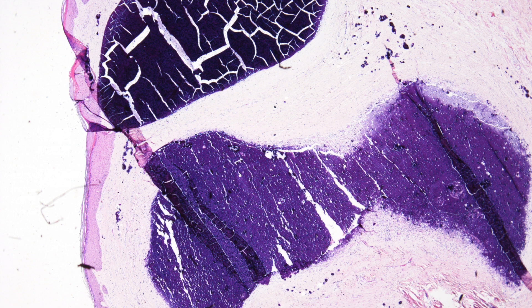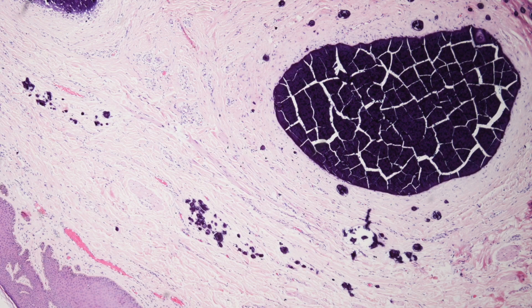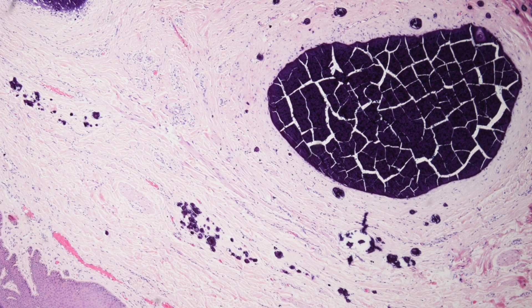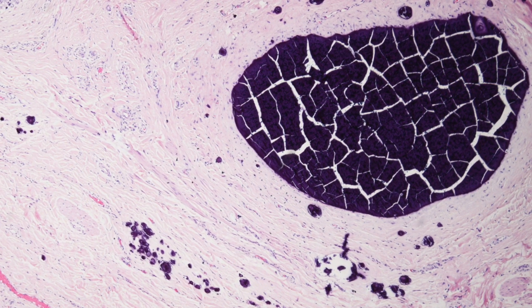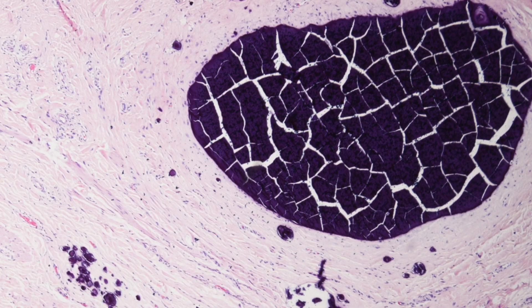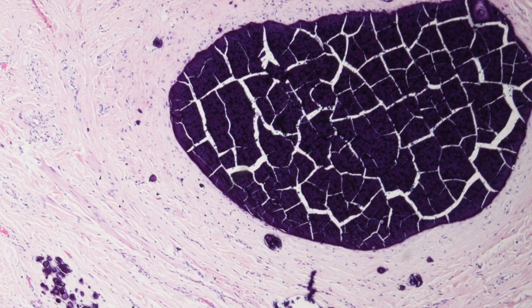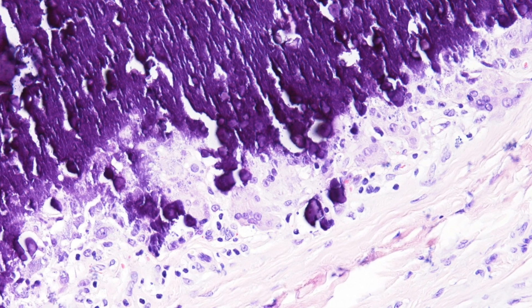The seventh case was a scrotal cyst from a 22-year-old man. This is idiopathic scrotal calcinosis. You see deep purple calcified nodules in the dermis, usually surrounded by a granulomatous inflammatory response. Scrotal calcinosis is the sort of condition where you don't really need a microscope to make the diagnosis, because you can see the purple masses on the glass slide before you slip it under the microscope. The low power shows a well-circumscribed deep purple mass, and at the periphery there is a granulomatous inflammatory response with some multinucleate giant cells.